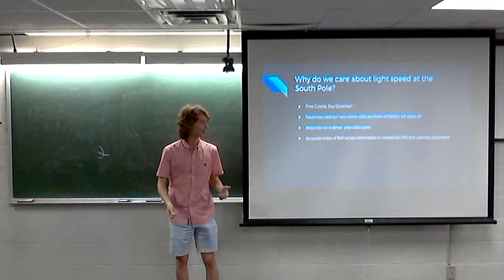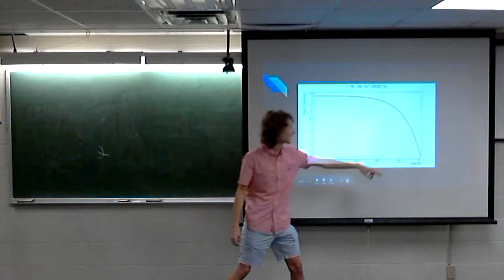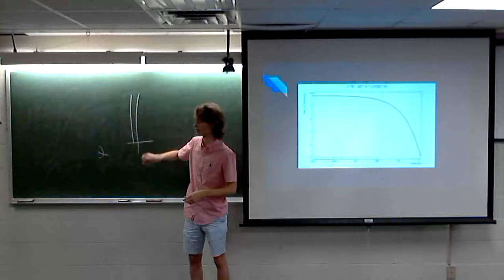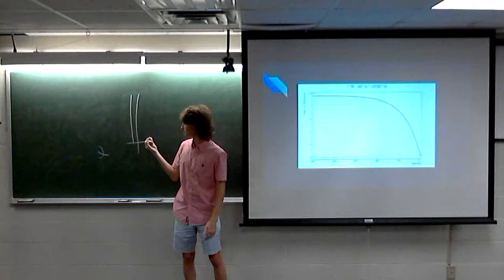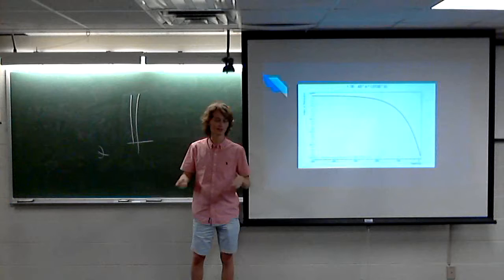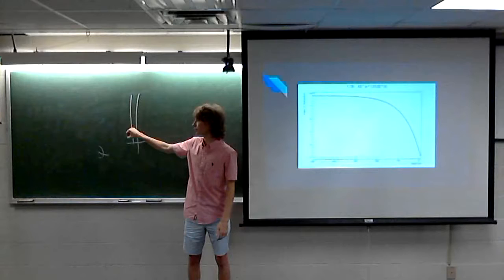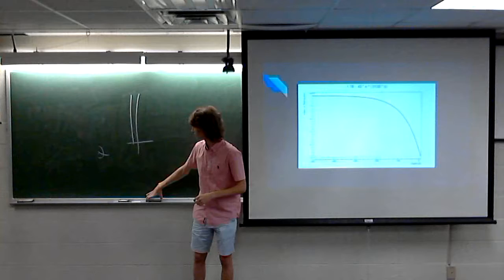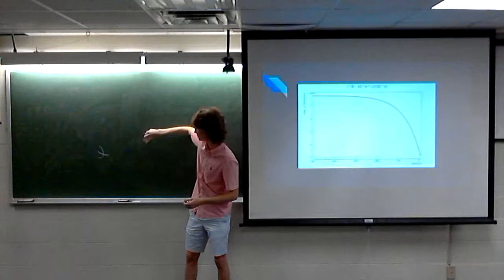Here's an example of a profile of index of refraction — notice it's asymptotic, with diminishing returns on the index of refraction value. If money were no object, you could always drill your antenna down to the asymptotic index of refraction. But because cost matters, we need to balance how deep we put our antenna to avoid shadowing versus the cost of drilling that deep. The deeper the antenna, the higher the index of refraction, the less shadow, and the more signal you pick up. An accurate index of refraction profile is important for effective simulation.